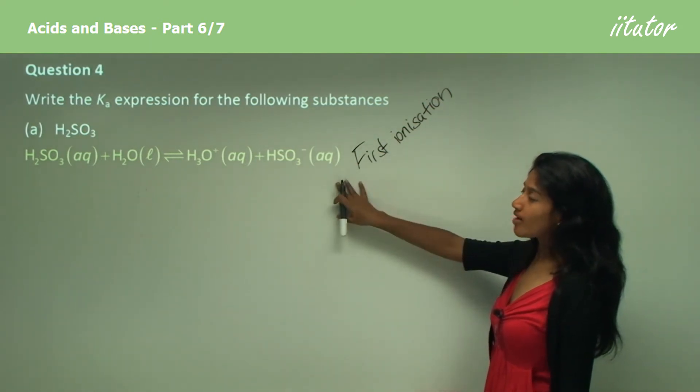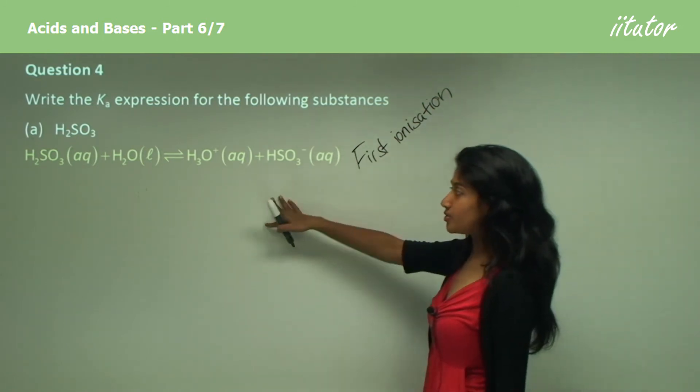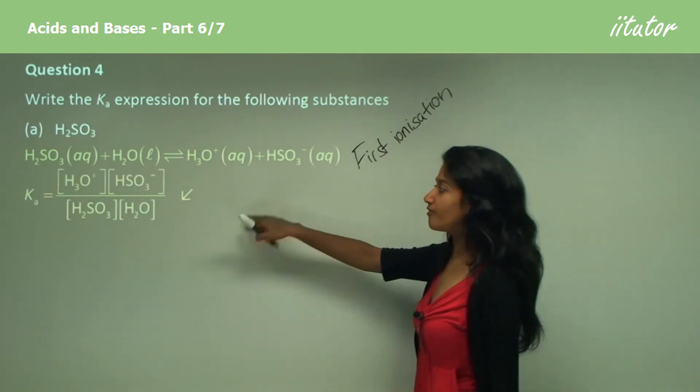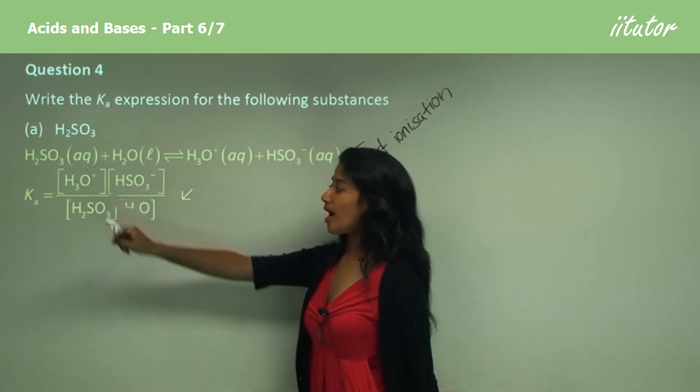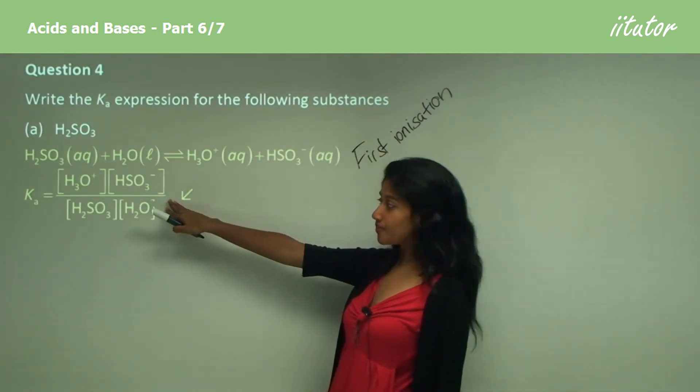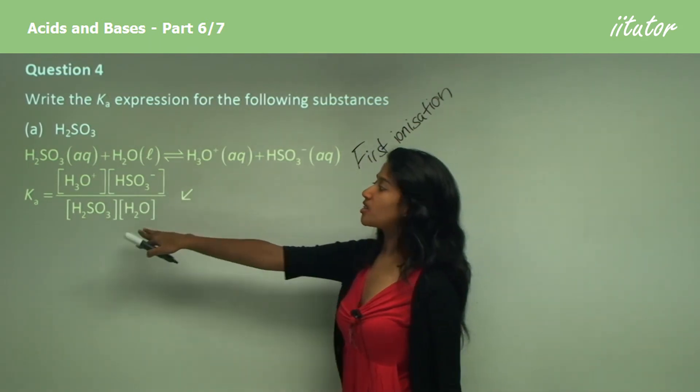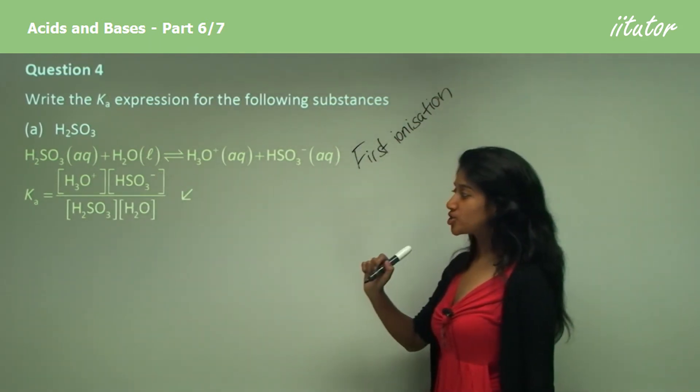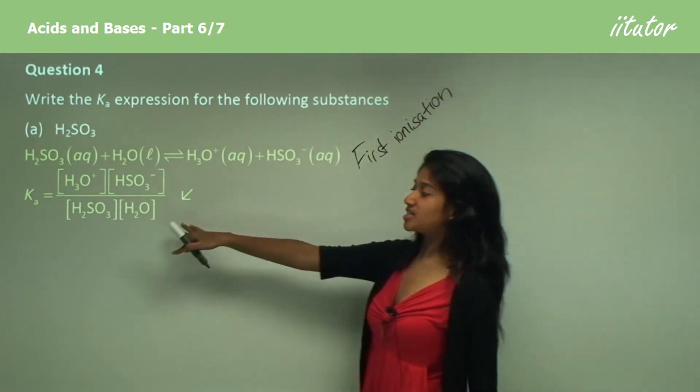So when you are writing the K expression for this, you would first write the concentration of the hydronium ions times the concentration of the HSO3- ion divided by the concentration of H2SO3 and water.